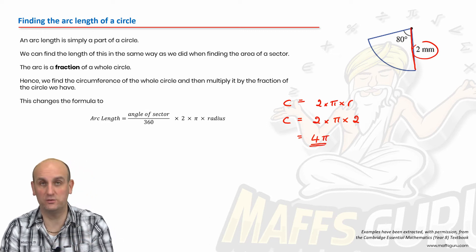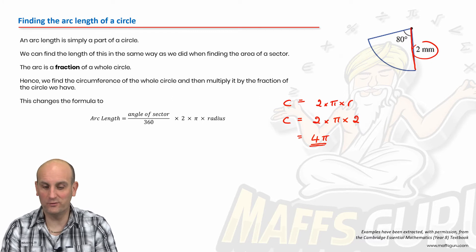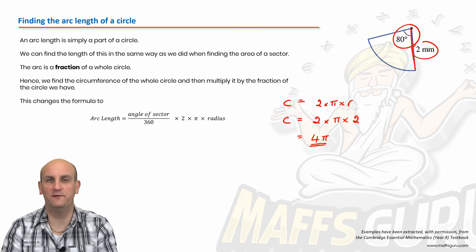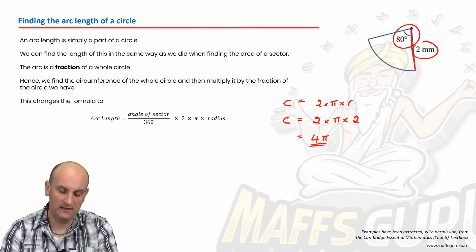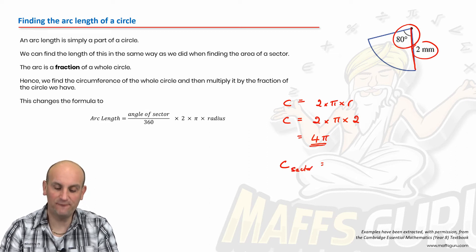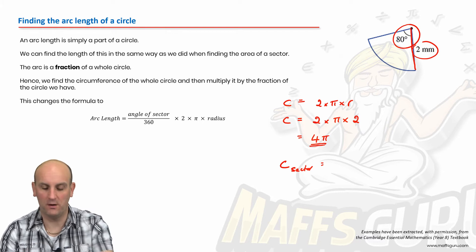So the circumference of the whole circle is 2 times pi times 2. And I'm going to leave this in an exact value and write that as 4 pi. That's for my whole circle.